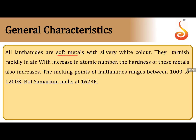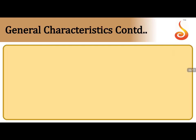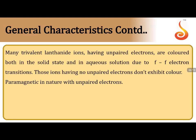General characteristics of lanthanides: they are soft metals with silvery white color that tarnish rapidly in air. Hardness increases with atomic number. Melting points range between 1000–1200 K, with samarium being an exception at 1623 K. All are trivalent and most have unpaired electrons except f⁰ and f¹⁴ configurations. They show color-exhibiting property due to f-f transitions, and paramagnetic nature due to unpaired electrons.